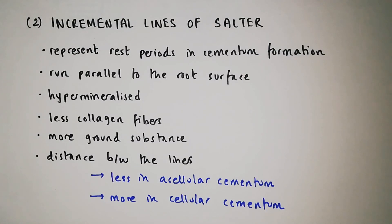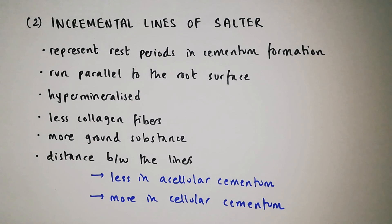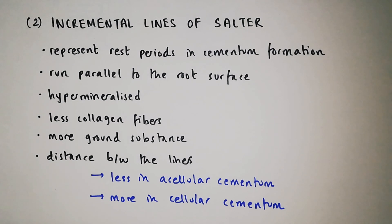The incremental lines of Salter represent the rest periods in cementum formation. They run parallel to the root surface and are hyper-mineralized areas which have less collagen fibers but more ground substance. In acellular cementum the distance between the lines is less, while in cellular cementum the distance between the lines is more.